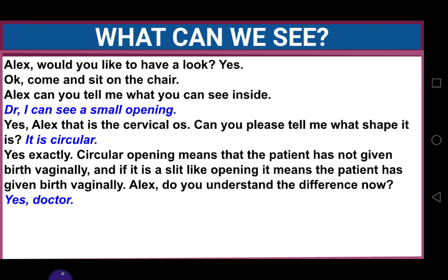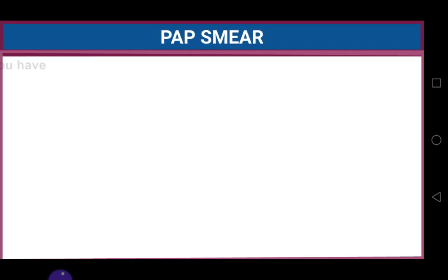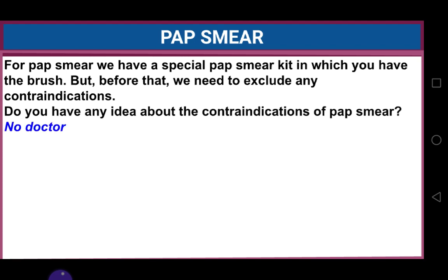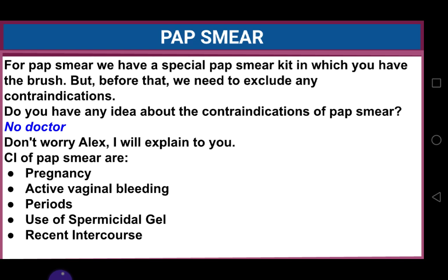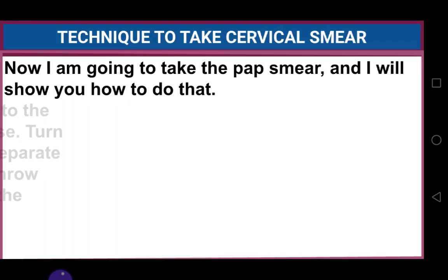During per speculum examination, look for any redness, discharge, bleeding, polyps, or any growth. You can also take a pap smear using a special pap smear kit with a special brush. Before taking a smear, exclude any contraindications. Contraindications of pap smear are: pregnancy, active vaginal bleeding or periods, recent use of spermicidal gel, and recent intercourse. If any of these conditions are present, we do not take a pap smear.